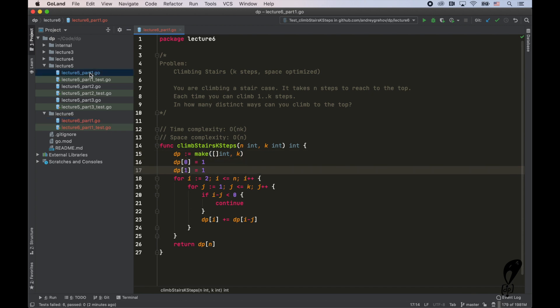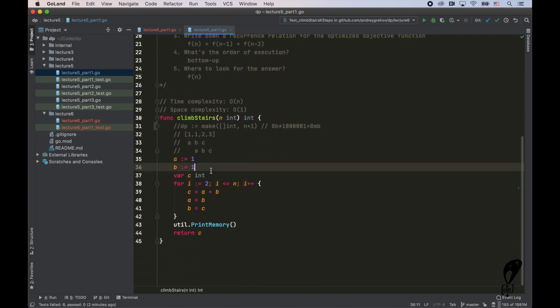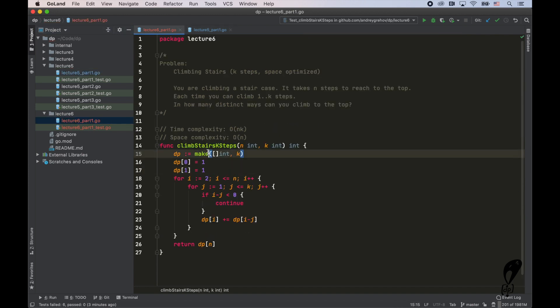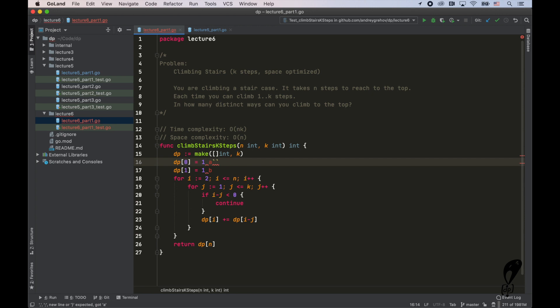If you remember from the previous lecture, when we were optimizing the two steps version of the problem, we created two variables A and B that we used to hold values from the previous calculations. This is exactly the same thing we're going to do. In this problem, K equals two. And this is sort of like DP zero and this is DP one. So we're going to do the exact same thing here. Imagine that this is A and that is B when K equals two.